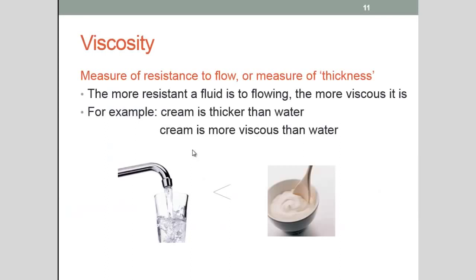Viscosity is a measure of resistance to flow or a measure of thickness. The more resistant a fluid is to flowing the more viscous it is. So for example cream is thicker than water. It's more resistant to flowing. Cream is therefore or can therefore be said to be more viscous than water.